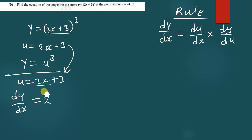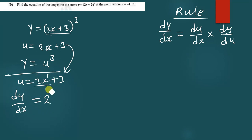When you differentiate 2x, the power here is 1. When you differentiate x, you get 1. So when you differentiate 2x, you are just going to remain with a constant — you get 2.